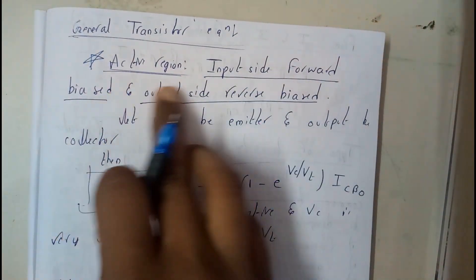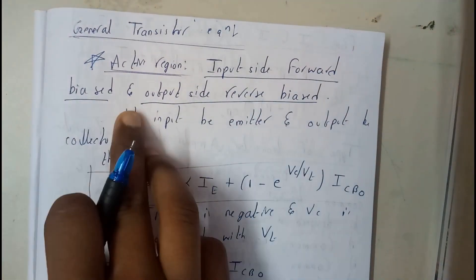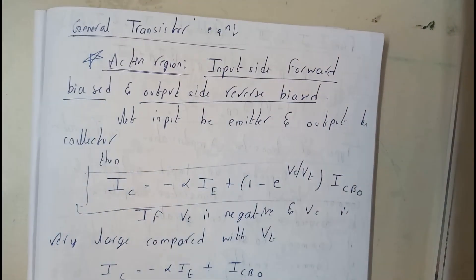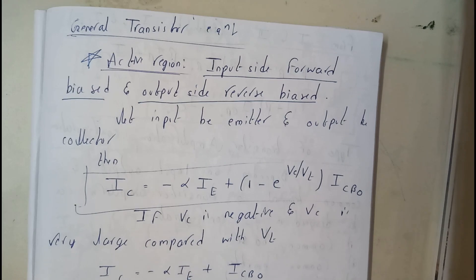So basically, active region is nothing but input side forward bias and output side reverse bias. Okay guys, so now I hope everyone got a small idea on that.